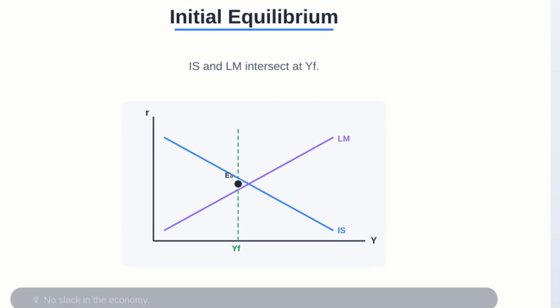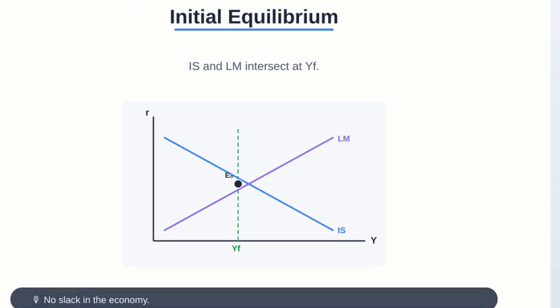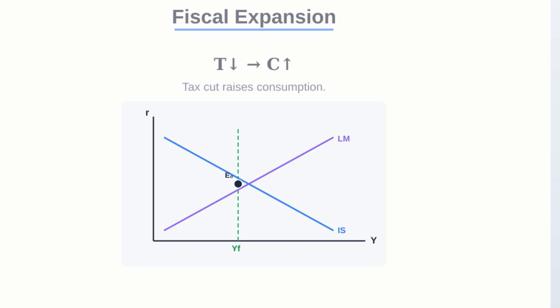First, there's the initial shift. Lower taxes mean more disposable income, right? So people spend more. This spike in demand shifts the IS curve to the right, and pretty soon the economy is overheating with way more demand than it can handle.